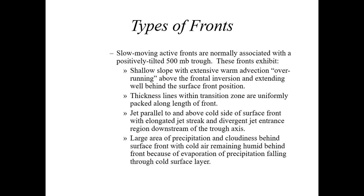With a slow-moving active front, cold air remains fairly moist and humid behind the front because of evaporation of precipitation falling through the colder surface layer. The winds are more parallel to the surface front so it doesn't push through very quickly. Positively tilted troughs generally have that orientation from northeast to southwest. Everything at mid- and upper-level winds is blowing parallel to the surface cold front. As a result, you're going to have a lot of clouds and precipitation even behind the cold front.